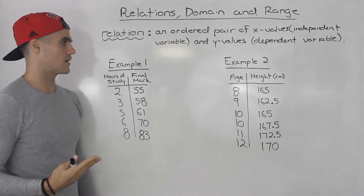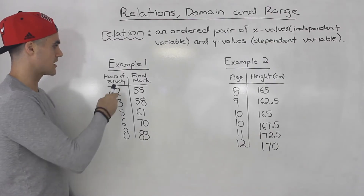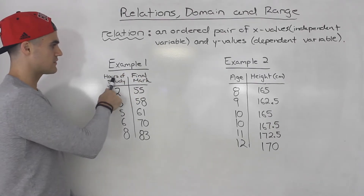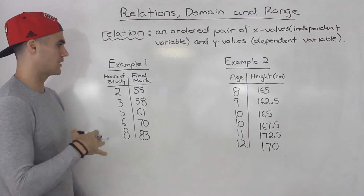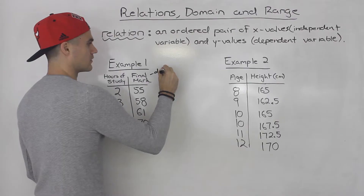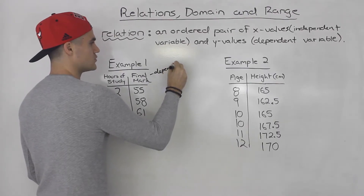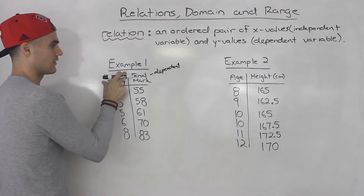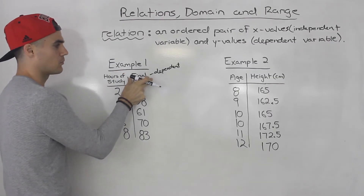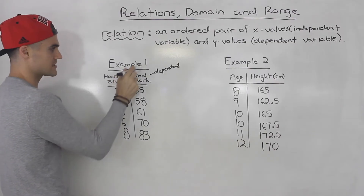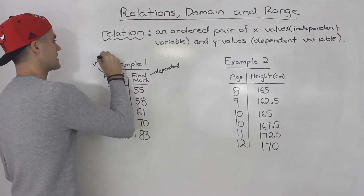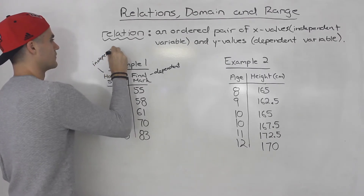So let's show two examples of relations. Example one, we have the hours of study versus the final mark. Out of these two variables, which one would be independent and which one would be dependent? Well, the final mark is usually dependent on the hours of study. The hours of study doesn't depend on the final mark — the final mark depends on the hours of study. So the final mark is the dependent variable, and hours of study is the independent variable.